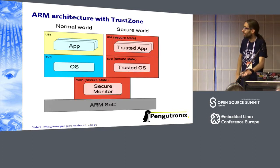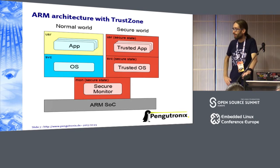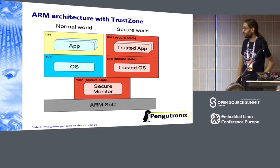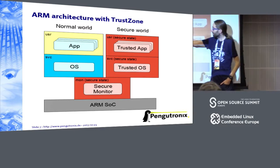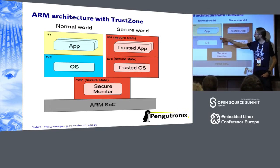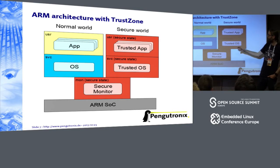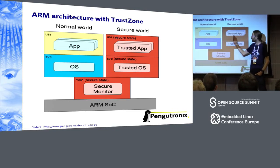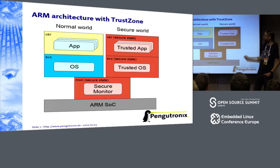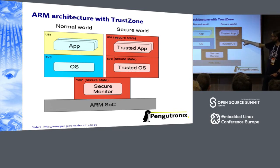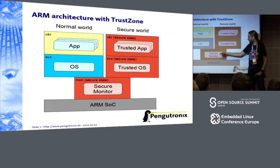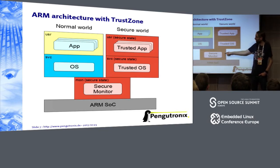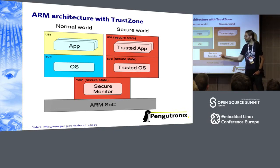ARM added, with the ARM 11 architecture and the Cortex ARMv7 and later, a concept of the normal world — as we know it — and in parallel, a completely separated environment: the secure world. In the secure world, there also exists the supervisor mode and the user mode. A special state, the secure monitor, has been added and is used to switch between the two worlds.